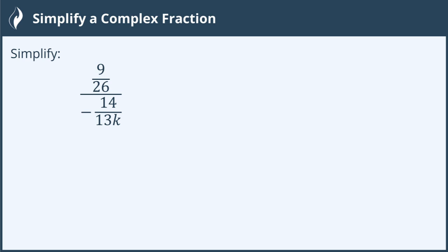So here I have the fraction 9/26 and I'm dividing it by the fraction negative 14 over 13k. Let's go ahead and rewrite this so it looks a little bit more friendly. We're going to do 9 over 26 and this is divided by the fraction negative 14 over 13k.